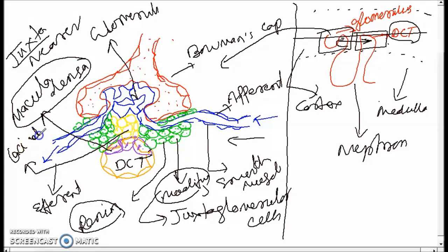The yellow-colored cells present here are called lacis cells — a special connective tissue cell type. The macula densa sends information to the lacis cells, and the lacis cells send information to the juxtaglomerular cells, which then synthesize the enzyme renin.